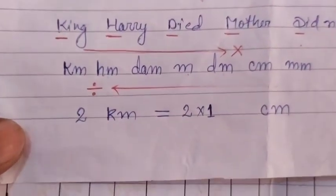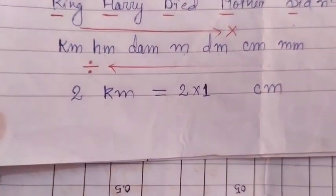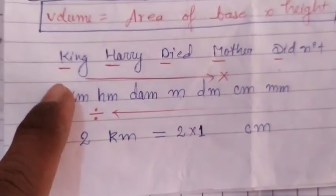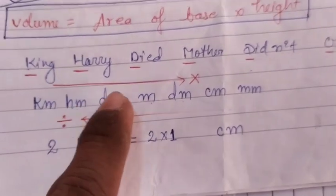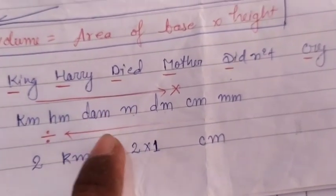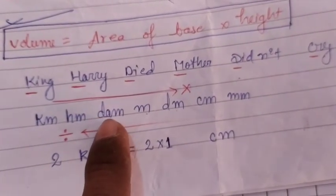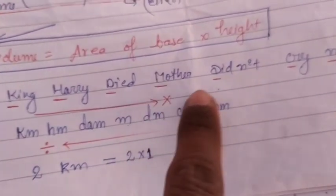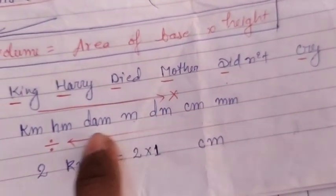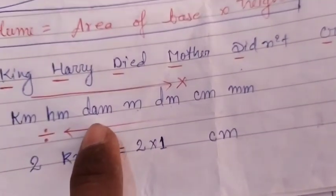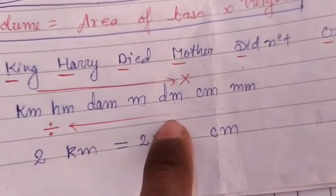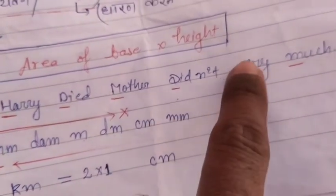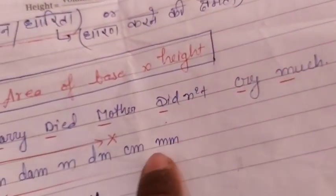In this mnemonic: K stands for kilometer, H for hectometer, D for decameter, M for meter, then D for decimeter, C for centimeter, and M for millimeter. Note that the short forms for deci and deca are different.